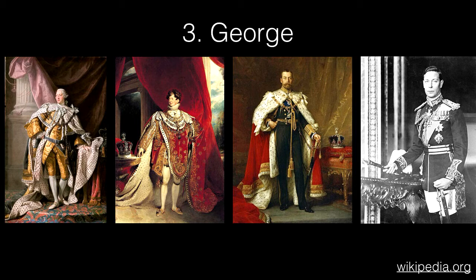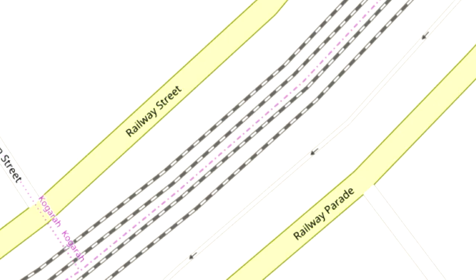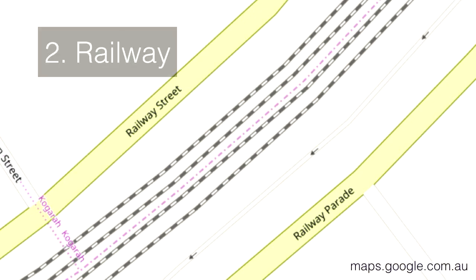Number three: George. We've had four King Georges in Australia — they reigned for a total of 84 years compared to Victoria's 60-odd. It's also just a common name. Did you know we had a Prime Minister whose first name was George? Number two: Railway. There are 32,000 kilometres of railways in Australia. The great thing is you can name the street that goes over the railway 'Railway,' but you can also name both streets on either side 'Railway' — so this is Railway Street on one side and Railway Parade on the other. It actually often turns into Station Street further up, which is number 11.